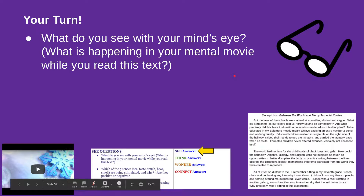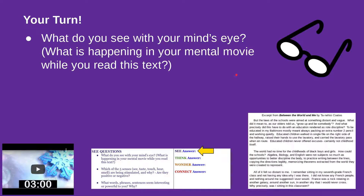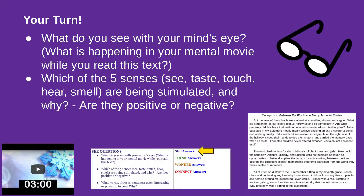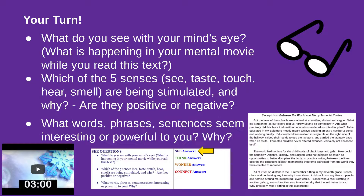Now it's your turn. For the 'see' questions you have three options — you don't answer all three, you just choose one to respond to. Option one: what do you see with your mind's eye, what is happening in your mental movie while you read the excerpt? Option two: which of the five senses — see, taste, touch, hear, and smell — are being stimulated and why, and are those things positive or negative? Option three: what words, phrases, or sentences seem interesting or powerful to you and why? Please pause the video and select one of those three questions to answer in the 'C answer' section on your capture sheet.